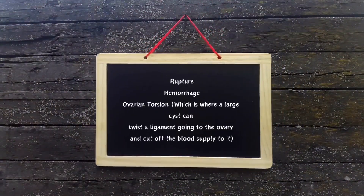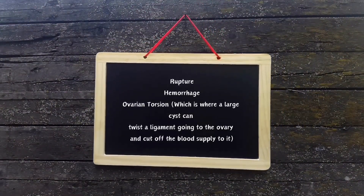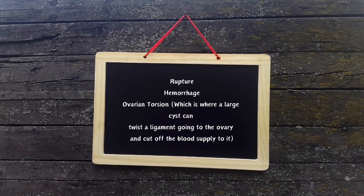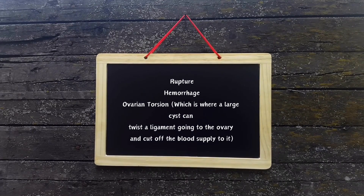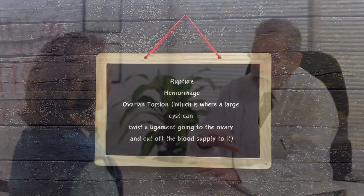Complications of ovarian cysts include rupture, hemorrhage, and ovarian torsion, which is where a large cyst can twist a ligament going to the ovary and cut off the blood supply to it.